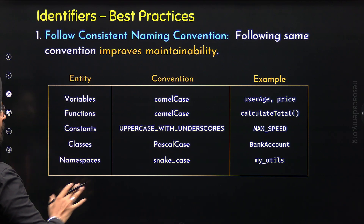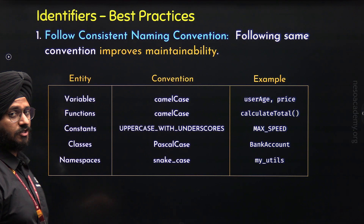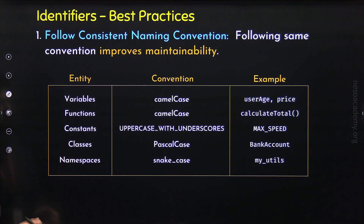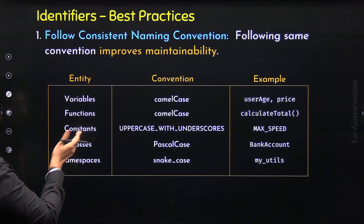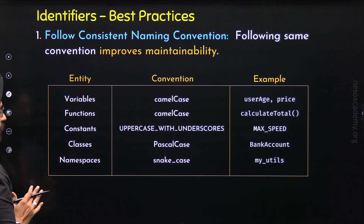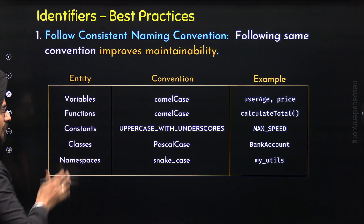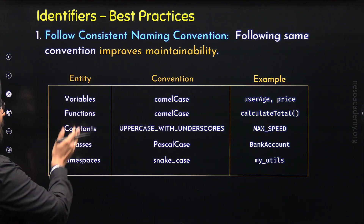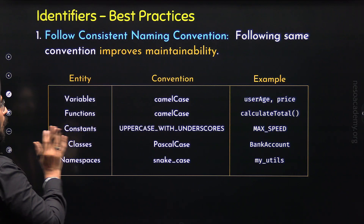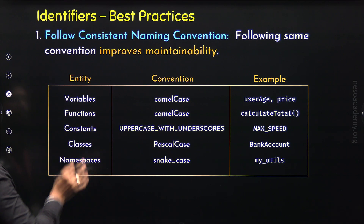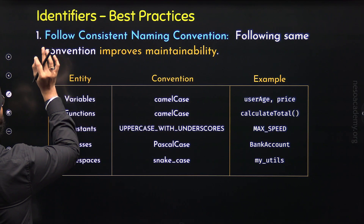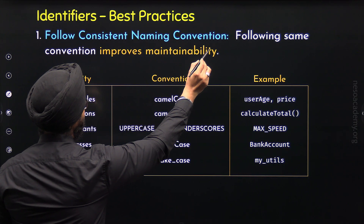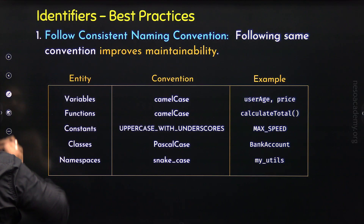So these are some of the entities in C++ and here are the conventions that we can follow for them. These are not all the entities we have in C++, please take note of it. You may not know all these entities yet — we will learn about them as we encounter them in this course. But for now, knowing the conventions that these entities will follow is important. With this, we are done with the first best practice: follow consistent naming convention.